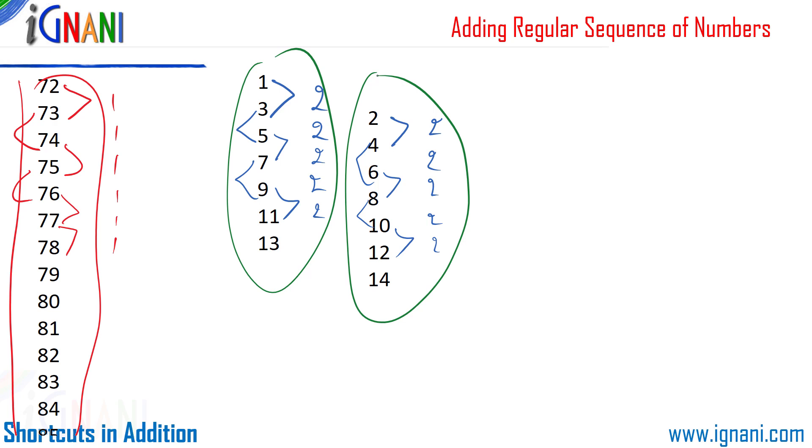Now let me pick another example: 7, 14, and so on. This is, you can say, the 7 table. So the difference here between each number is 7. Between 7 and 14 there is a difference of 7. So this is again a series, except that the difference between each number is 7.